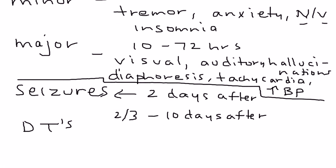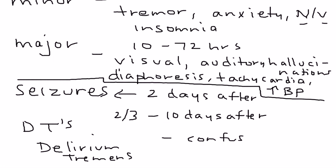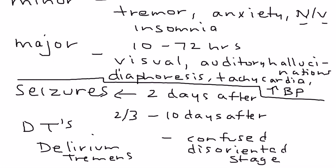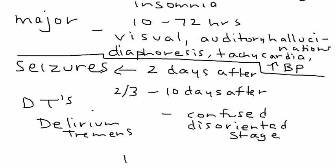What are DTs? DTs — essentially delirium tremens — as you can probably deduce from the name delirium, is a confused and disoriented state. Another thing that happens in this stage is that you also get an increase in temperature, essentially a fever. Those are the four levels of severity of alcohol withdrawal.